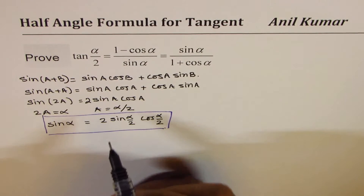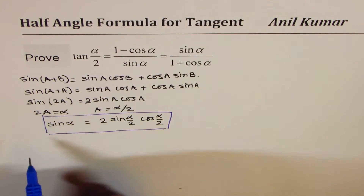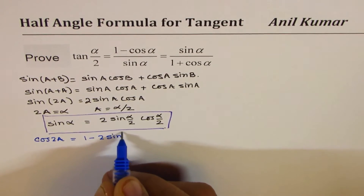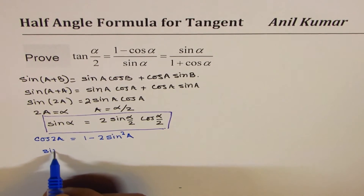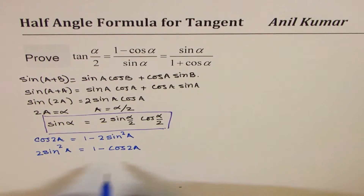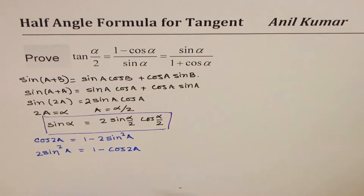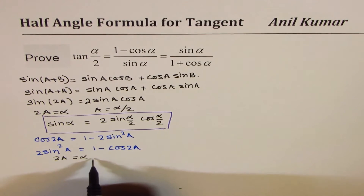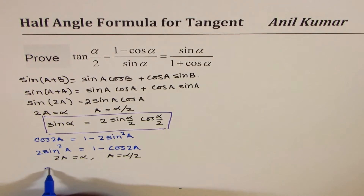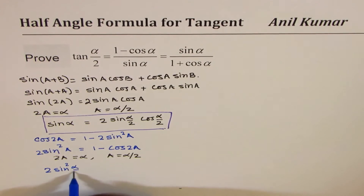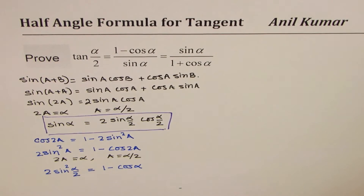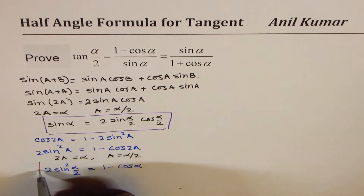Now, if I make the substitution — if 2a equals alpha, then a equals alpha by 2 — I get sin alpha equals 2 sin (alpha/2) cos (alpha/2). So we get one relation of alpha in terms of half angles. The other expression comes from cos 2a equals 1 minus 2 sin squared a. Rearranging: 2 sin squared a equals 1 minus cos 2a. Substituting 2a equals alpha gives 2 sin squared (alpha/2) equals 1 minus cos alpha.